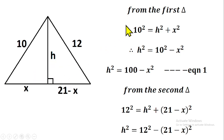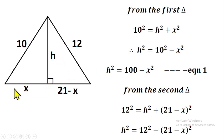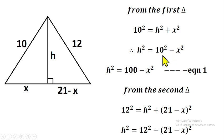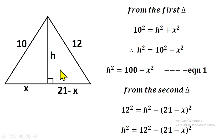From the first right-angle triangle, we apply the Pythagorean theorem. The hypotenuse is 10, so we have 10² = h² + x², which gives us 100 = h² + x². Making h² the subject: h² = 100 − x². We call this Equation 1.